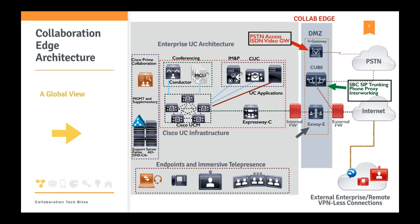The third collaboration edge component is the Expressway solution, which is the main focus of this presentation. Expressway enables mobile remote access — VPN-less registration of clients including Cisco Jabber, 7800 and 8800 series phones, and TC endpoints such as EX60, EX90, SX10, and SX20. Expressway also enables business-to-business voice and video, XMPP federation, and integration with Jabber Guest — a business-to-consumer service allowing web video and audio communication from outside the enterprise to internal users.